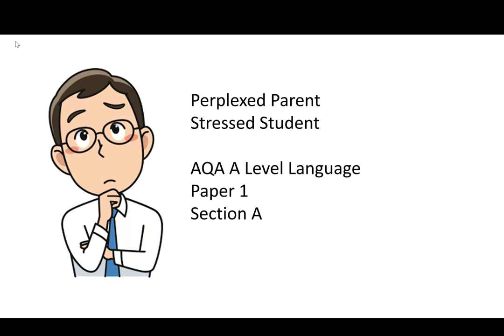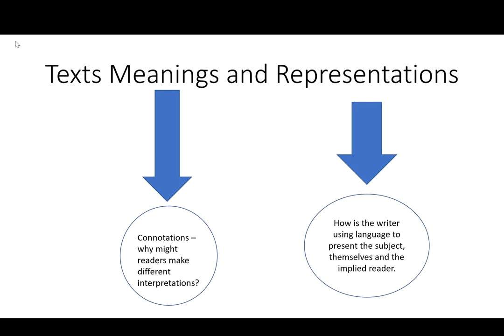There are three parts to Section A: part one is an analysis of text A, part two is an analysis of text B, and part three is a comparative analysis of the two texts together. The questions for both A and B, the individual textual analysis, ask for a discussion of how the writer uses language to create meanings and representations.